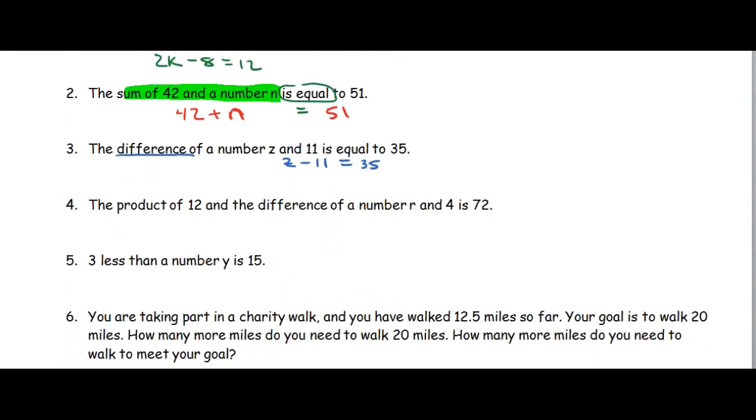Number 4, product of 12 and the difference of a number r and 4 is 72. Now, we know where the equal sign goes, and that goes right here. So it's going to be equal to 72. Well, when we look at the left side, the product of 12 and the difference of a number r and 4.